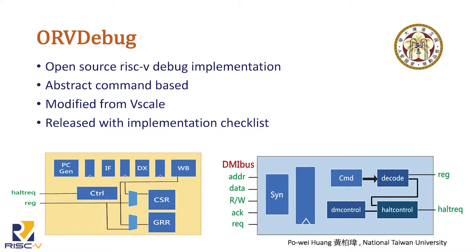Okay, nice to meet you. My name is Pooh Hong. I am from National Power University. My work is about open-source RISC-V debug implementation. As you probably know, the Debug Working Group is working on a very good spec, which Megan will tell you about tomorrow.